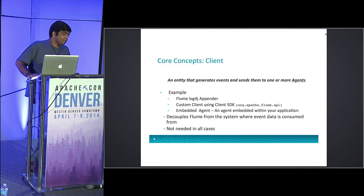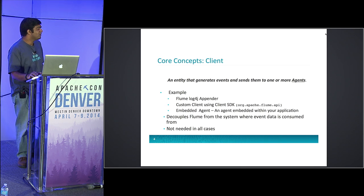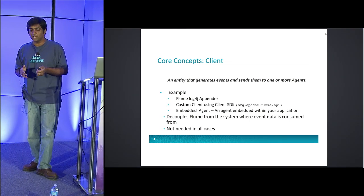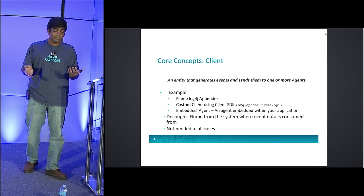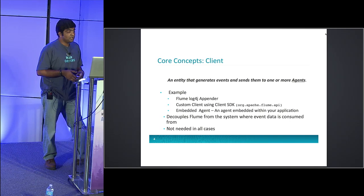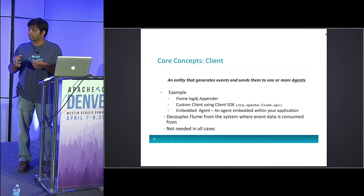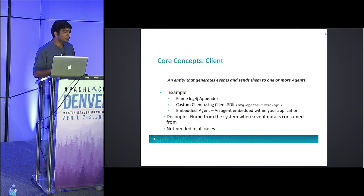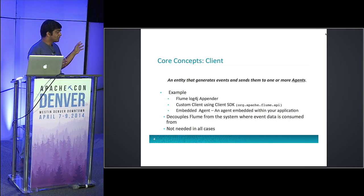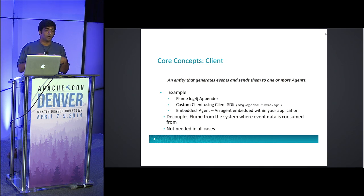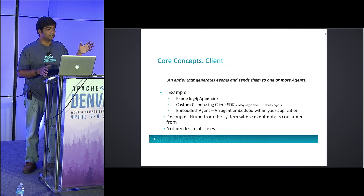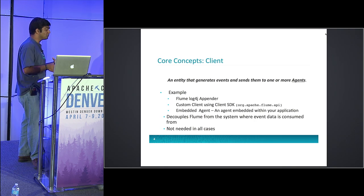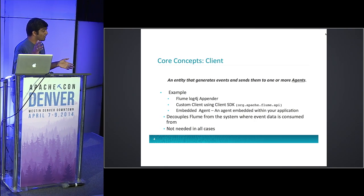There are two other options. One is the log4j appender. Most people want to send log data, and in 90% of cases in Java they're probably using log4j. There's a log4j appender that comes packaged with Flume, and it can talk to multiple Flume agents in case one of them is dead or you want to round-robin between them. You'd specify the log4j appender in your log4j.conf using the Flume log4j class, then configure it to send data to machines on the port where your Flume agents are listening.